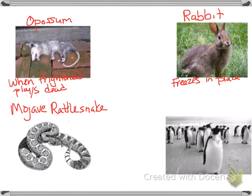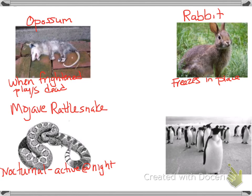The Mojave rattlesnake is nocturnal — it comes out and is active at night because it's so hot during the day, so it rests to stay cool.